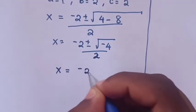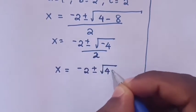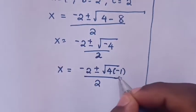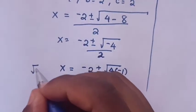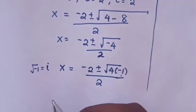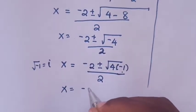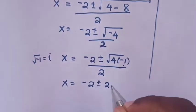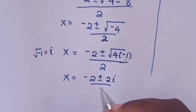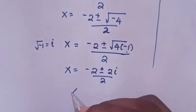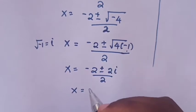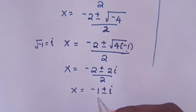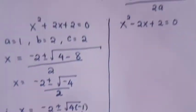So x equals negative 2 plus or minus the square root of 4 times negative 1, divided by 2. We know that the square root of negative 1 is the imaginary unit i, so x equals negative 2 plus or minus 2i, all over 2. Dividing by 2, x equals negative 1 plus or minus i. So this is the value of x from this part.